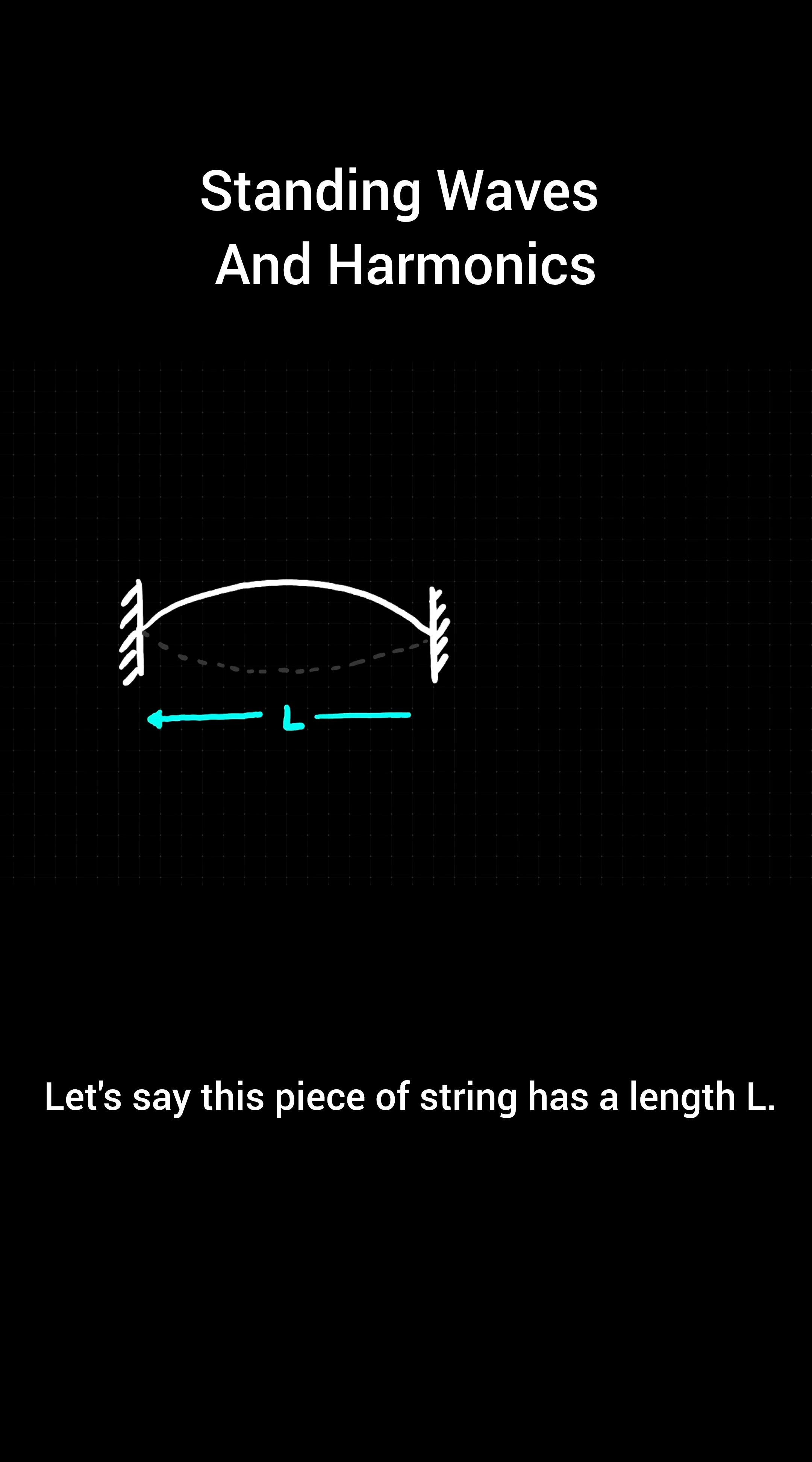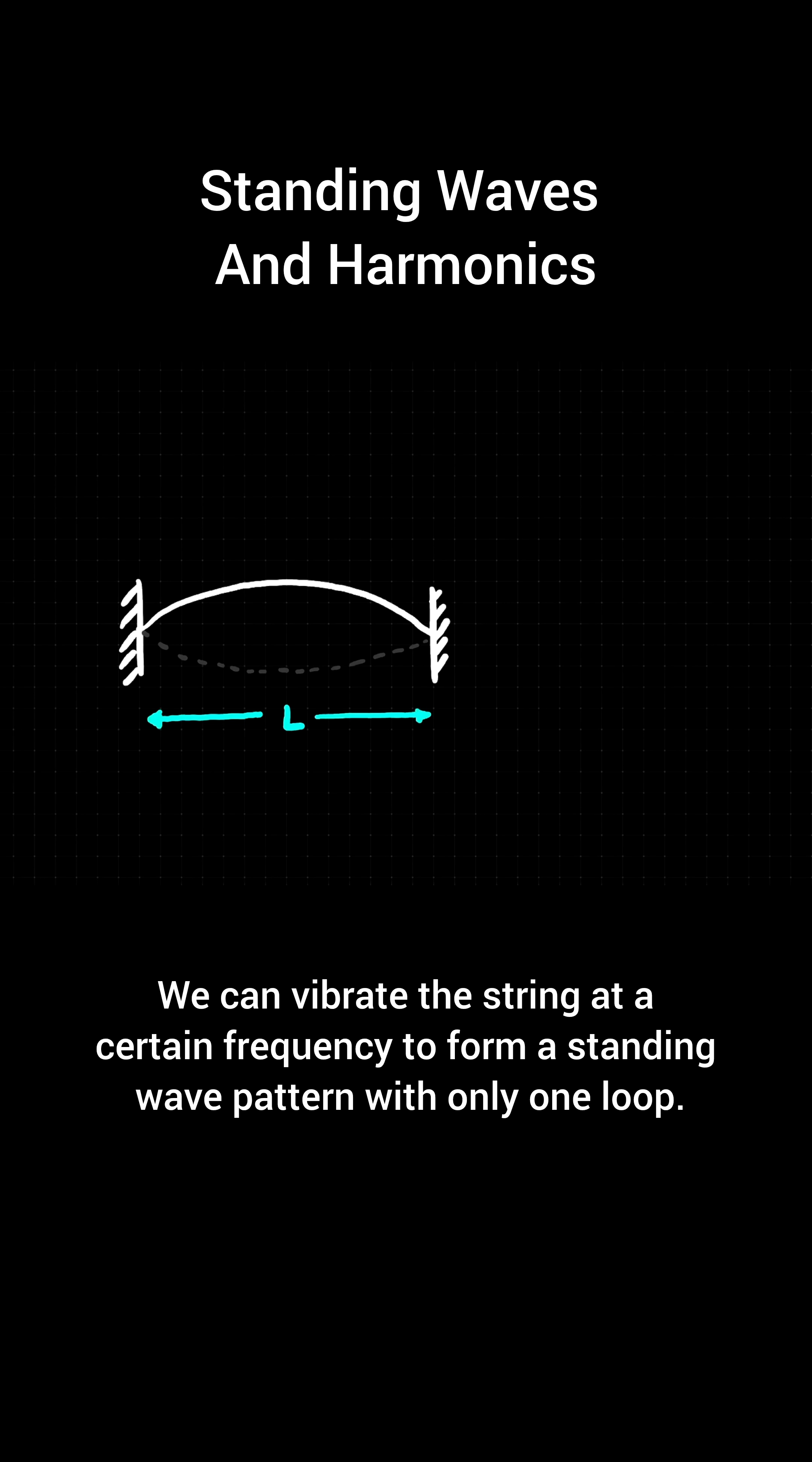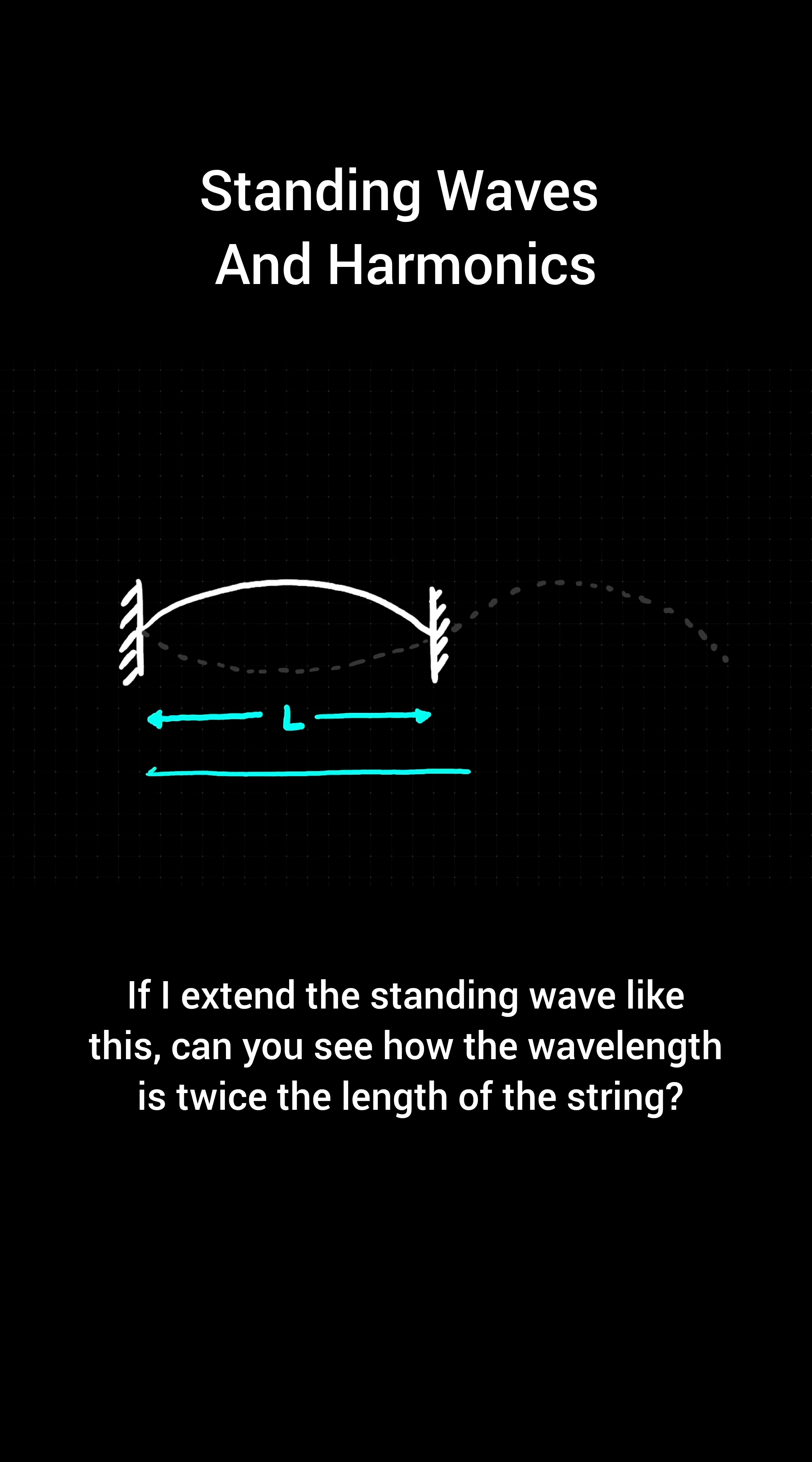Let's say this piece of string has a length L. We can vibrate the string at a certain frequency to form a standing wave pattern with only one loop. If I extend the standing wave like this, can you see how the wavelength is twice the length of the string?